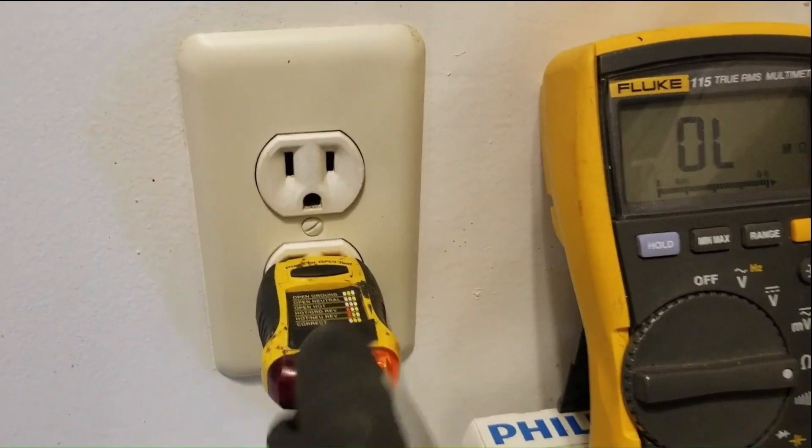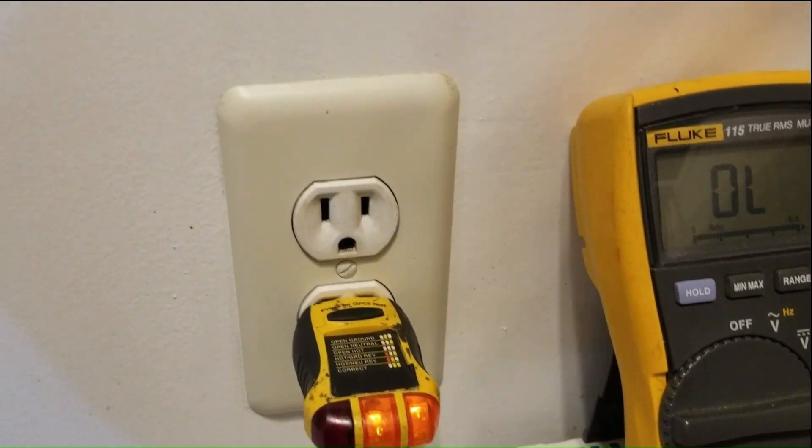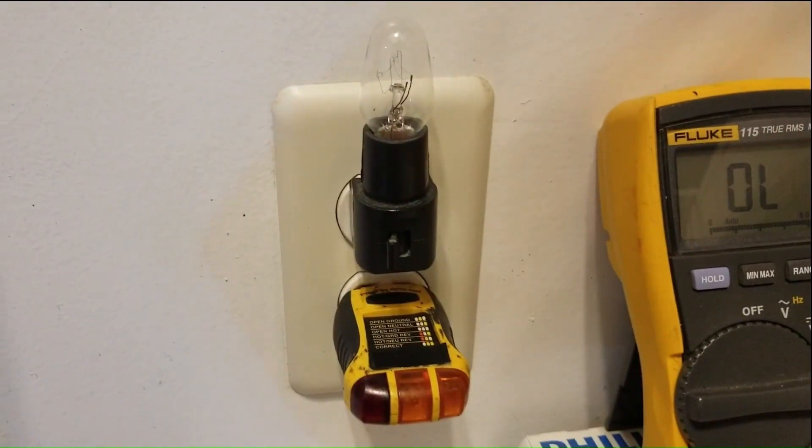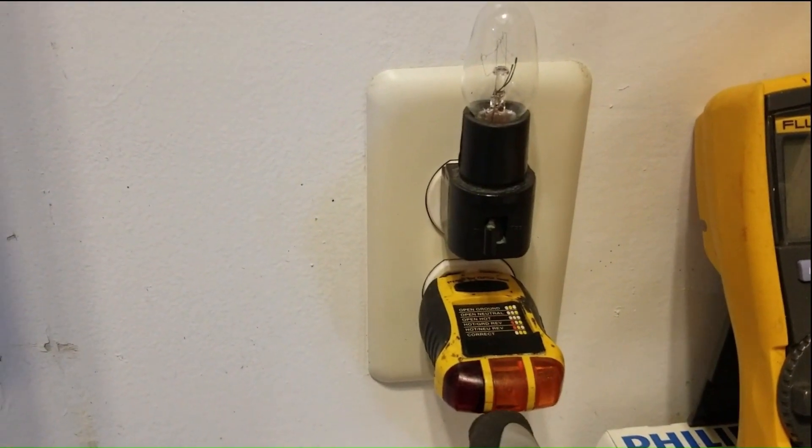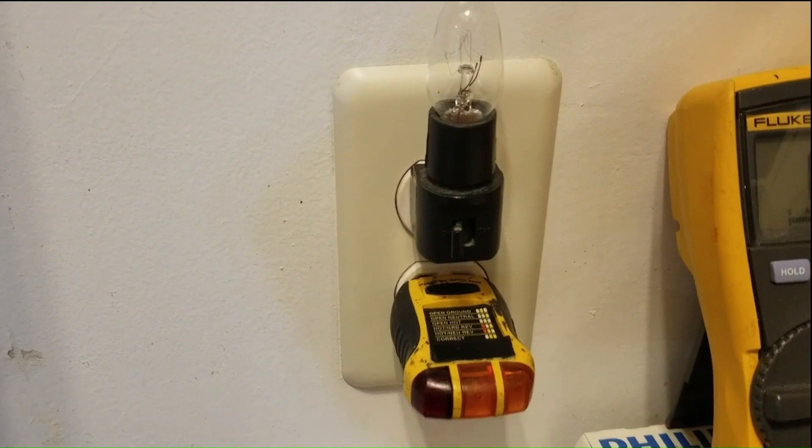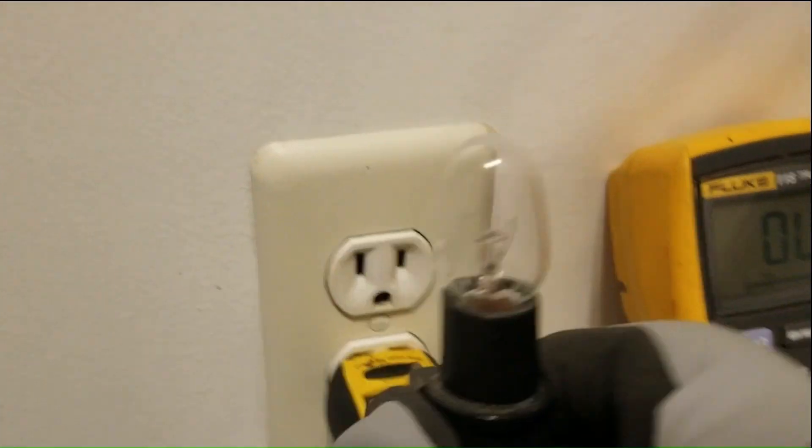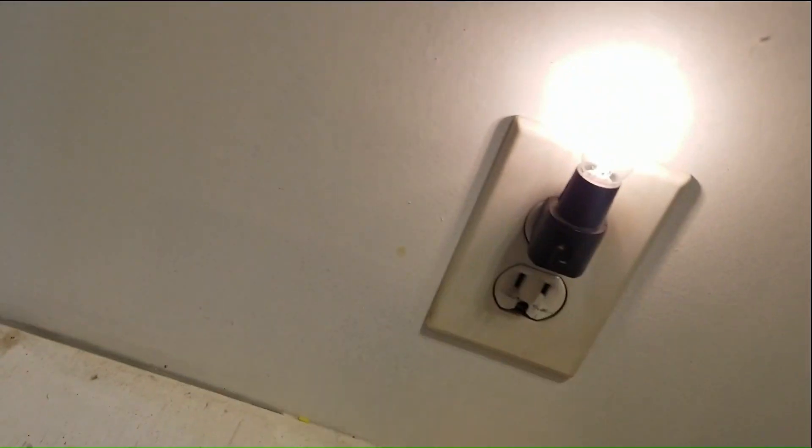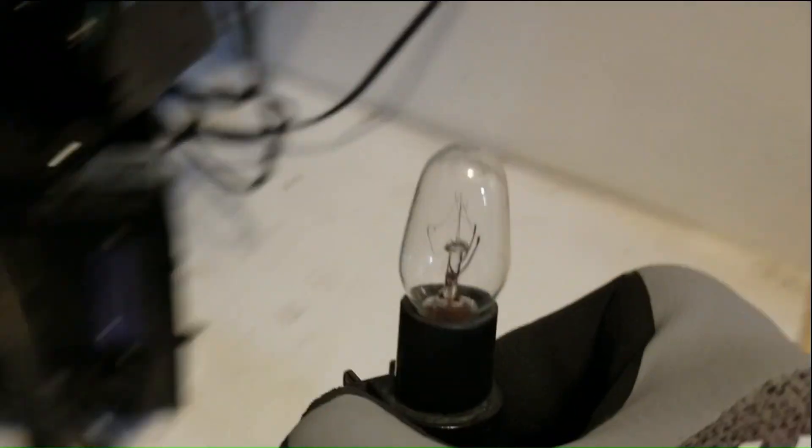According to this voltage tester, this outlet appears to be working properly. However, when I plug this light into it, the light doesn't work. Look at the voltage tester—it also goes dead. But if I plug the same light into another outlet, it works fine.